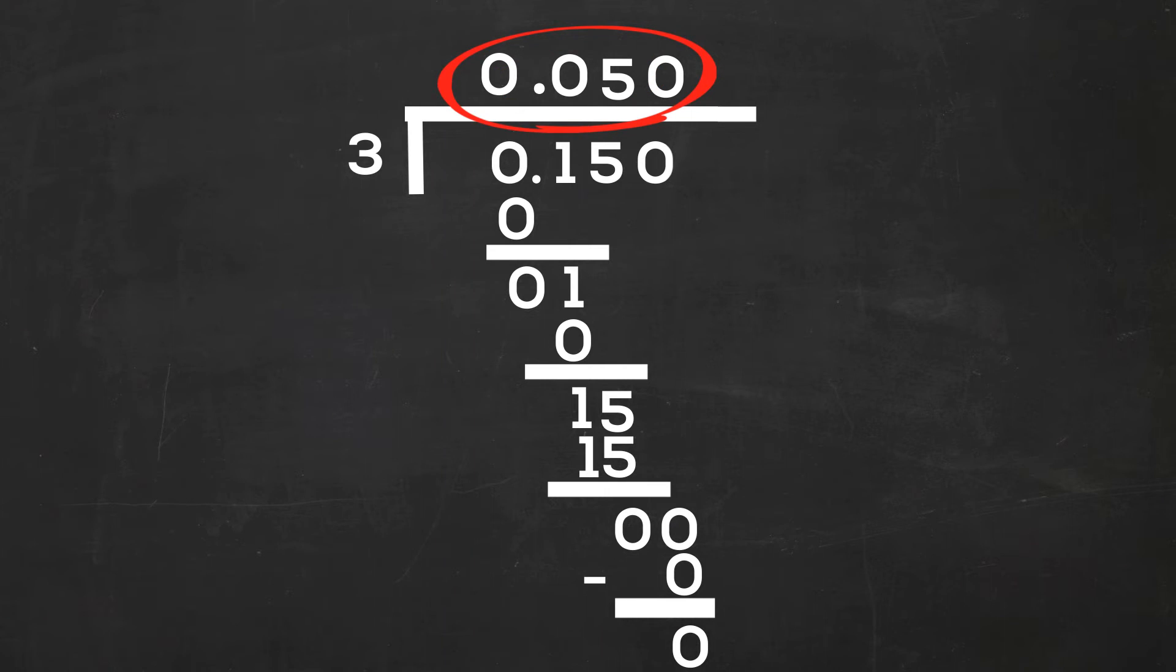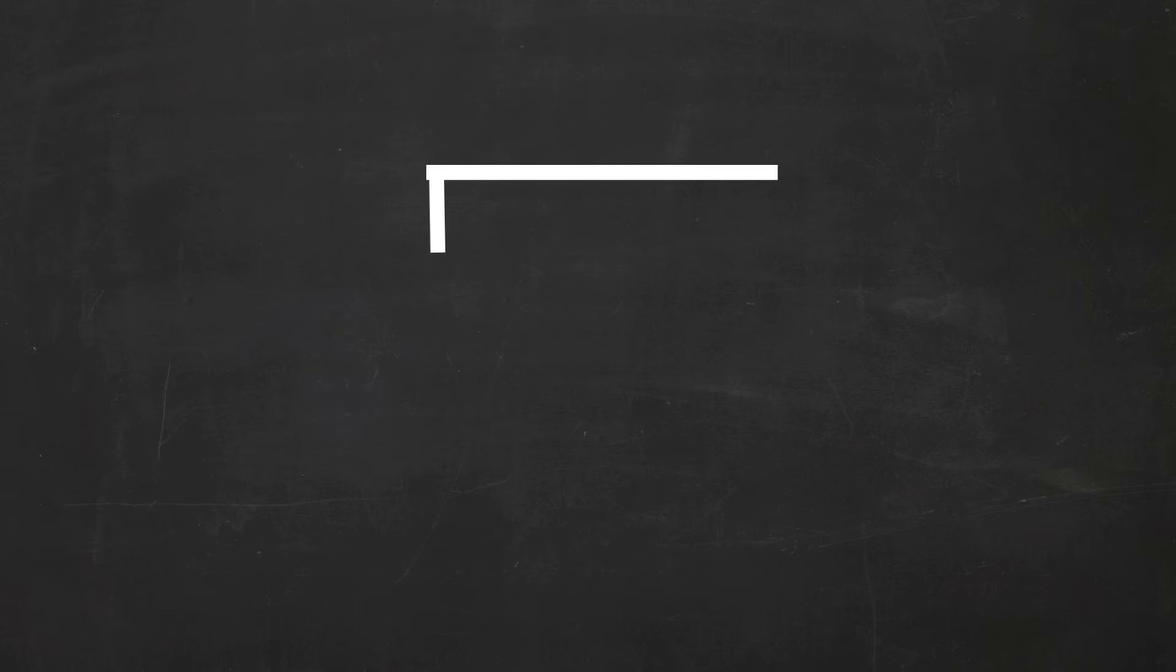Okay, let's look at the next example. We have 0.372 divided by 4. Move the decimal up. 4 goes into 0, 0 times. 0 times 4 is 0, and when I subtract them, I get 0.